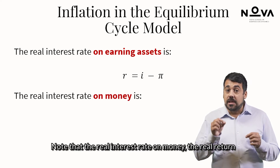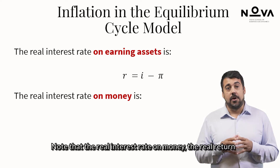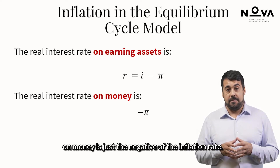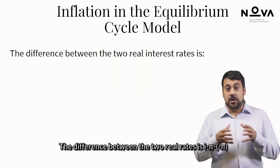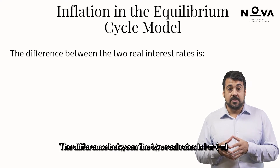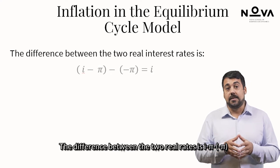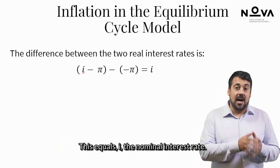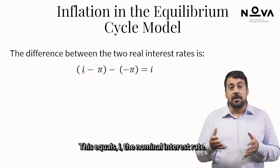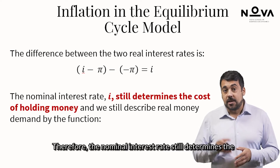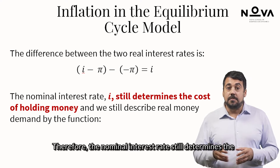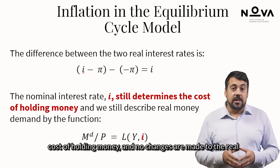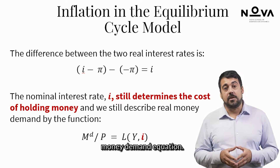Note that the real interest rate on money — the real return on money — is just the negative of the inflation rate. The difference between the two real rates is I minus pi, minus minus pi. This equals I, the nominal interest rate. Therefore, the nominal interest rate still determines the cost of holding money, and no changes are made to the real money demand equation.